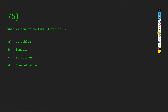We cannot declare static in C: a variable, a function, or a structure? Yes, we can define a variable as static in C. Yes, we can define a function as static in C. A structure is just a user-defined data type, and if we can declare a variable static we can also define a structure as static. So the answer is D: none of the above.